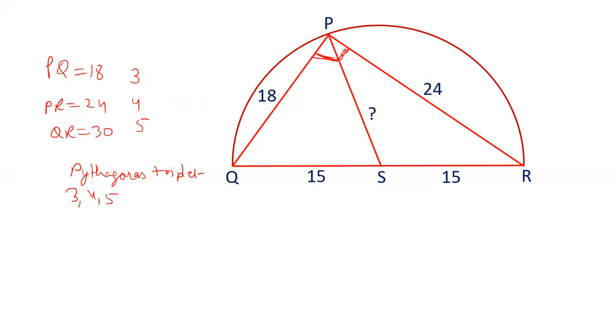If this angle is 90 degrees, that means we can draw a semicircle and Q and R will be diameter. P will be point on the, because angle in semicircle is 90 degrees. That is the property. So with this property, we can say that we can draw a semicircle over here. Angle P is 90 degrees. QR is the diameter. S is the midpoint of diameter, that is the center of this semicircle.